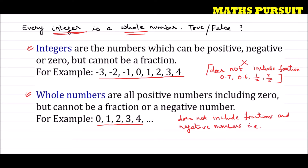Examples of fractions excluded from whole numbers are: 0.5, 0.4, 7/2, or 1/9. Whole numbers also do not include negative numbers — negative numbers like minus 1, minus 2 and so on. These things are not included in whole numbers.